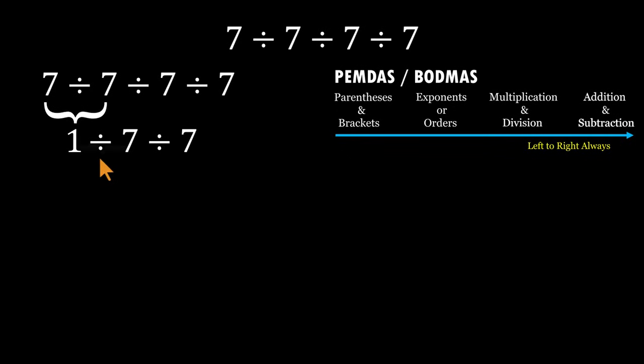Next, 1 divided by 7 can be written as 1 over 7. Bring the final 7 down.